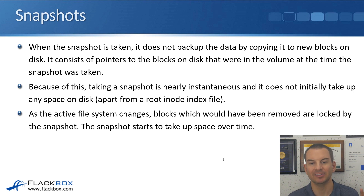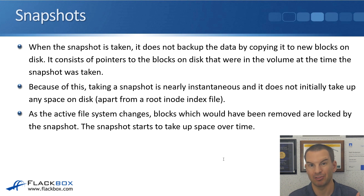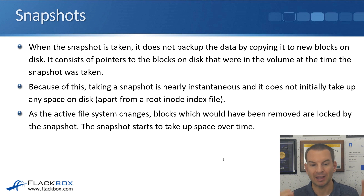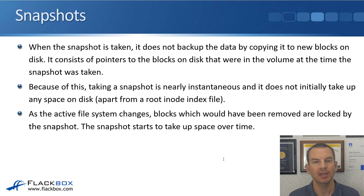When the snapshot is taken, it does not back up the data by copying it to new blocks on disk, so it doesn't take up double the amount of blocks. It consists of pointers to the blocks on disk that were in the volume at the time the snapshot was taken. Because it's not copying data to new blocks, the snapshot is nearly instantaneous. It does not initially take up any space on disk apart from a root inode index file — about 4 kilobytes in size.